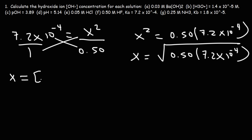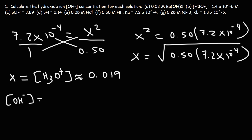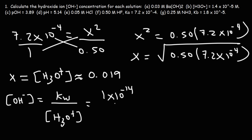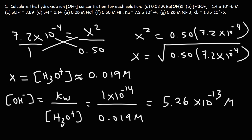X equals the H₃O⁺ concentration and also the fluoride concentration. Taking the square root gives approximately 0.019 M, which is relatively small compared to 0.50. Now that we have the H₃O⁺ concentration, we calculate [OH⁻] as Kw divided by the hydronium ion concentration. That's how you calculate the hydroxide ion concentration when given the concentration of a weak acid solution.